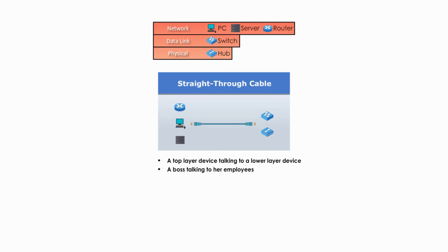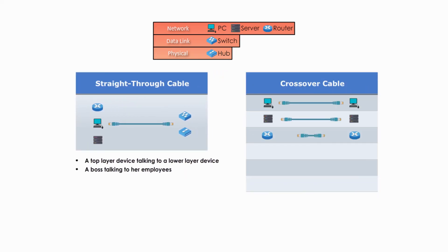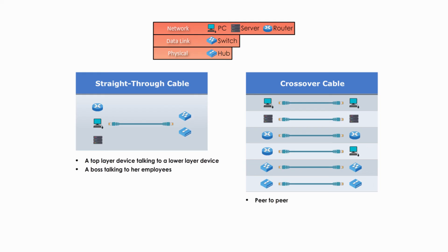Here's a simple rule of thumb. To connect two devices at different layers, we use a straight-through patch cable. To help you remember this rule, you can think of it like this: when a top layer device is talking to a lower layer device, like when a boss is talking to her employees, they just have a direct straight talk. On the other hand, to connect devices at the same layer, we use a crossover patch cable.